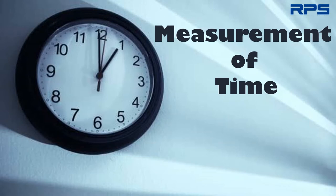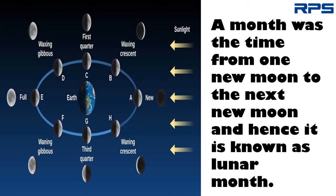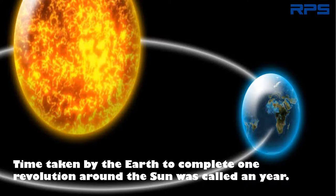In ancient days, the measurement of time was based on some natural periodic events. For example, a day was the time period between two consecutive sunrises. A month was the time from one new moon to the next new moon, and hence it is known as a lunar month. The time taken by the Earth to complete one revolution around the Sun was called a year.